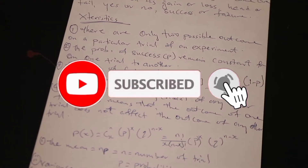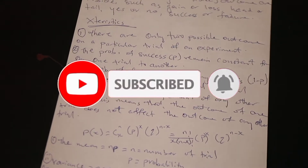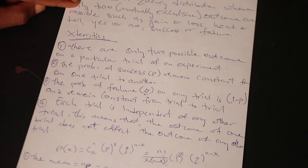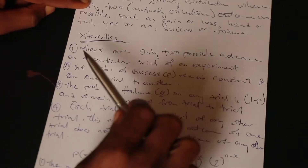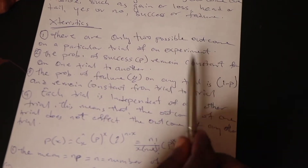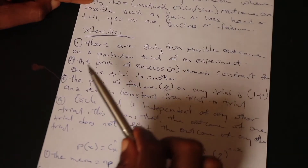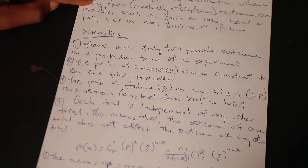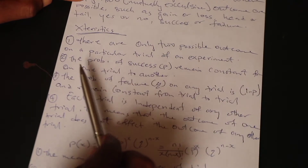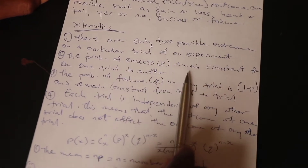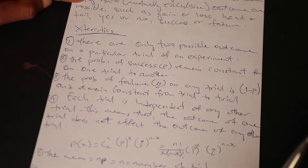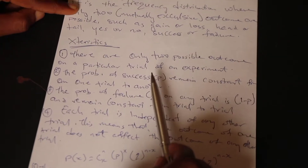So you can see only two mutually exclusive outcomes are possible. Let's move further. Here are the characteristics of binomial distribution. One: there are only two possible outcomes on a particular trial of an experiment. Two: the probability of success P remains constant from one trial to another.